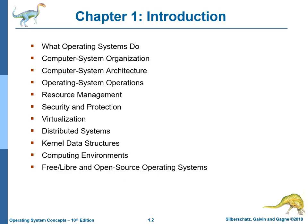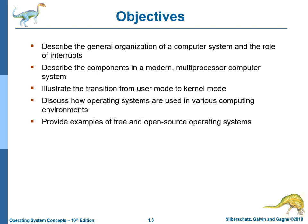This is a list of the things that will be covered today. The objectives are: to describe the general organization of a computer system and the role of interrupts; to describe the components in a modern multiprocessor computer system; to illustrate the transition from user mode to kernel mode; to discuss how operating systems are used in various computing environments; and to provide examples of free and open source operating systems.